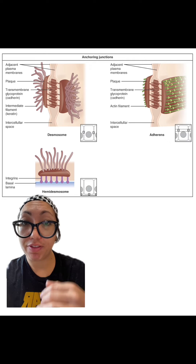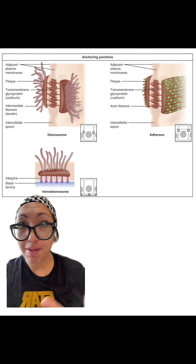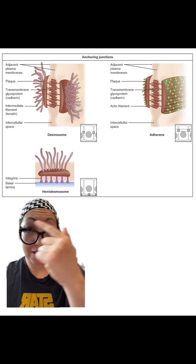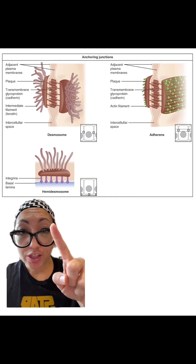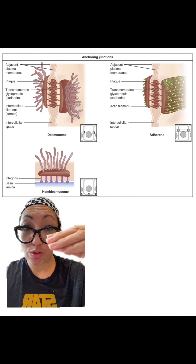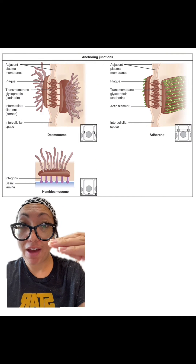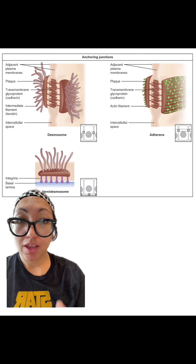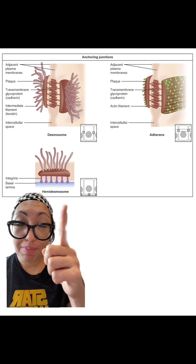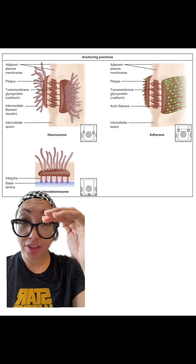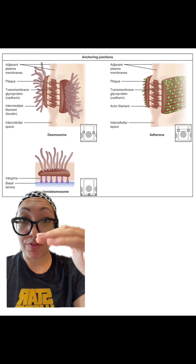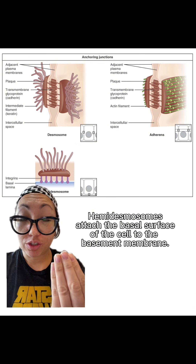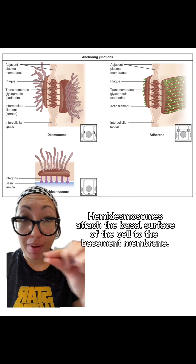For the hemidesmosome, remember that the prefix hemi means half — think of hemisphere for the globe or cerebral hemisphere for our brain. So hemidesmosome just means you basically have half of that structure. Notice where it's located: these hemidesmosomes are going to attach the cell to the basal surface, giving us some strength on the bottom of the cell.